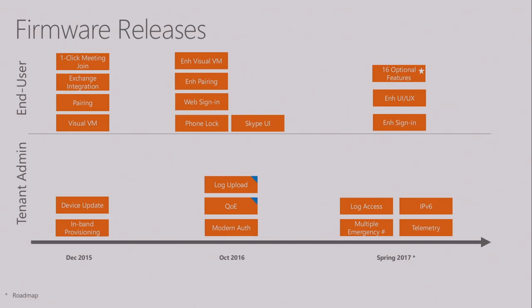Let's talk about the firmware release cadence. We're looking at releasing twice a year. Every release will have tenant admin features and end user experience features, along with bug fixes and engineering enhancements. With the first release with Polycom in 2015, we had exciting end user features: one-click join meeting so you get a reminder and click once to join; Exchange integration; pairing; and visual voicemail. In terms of admin features, we had device update — pushing updates through in-band settings — and full in-band provisioning features.